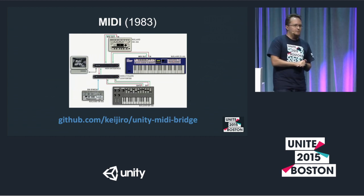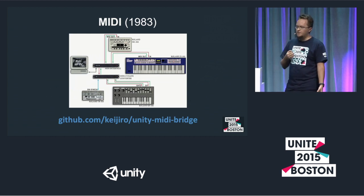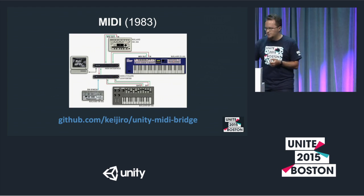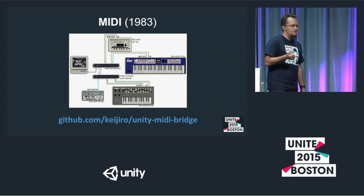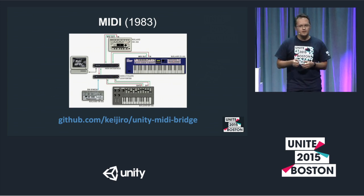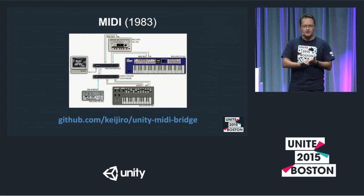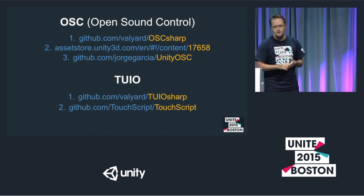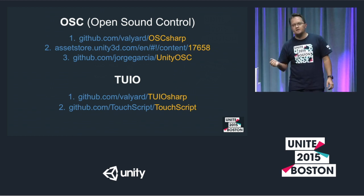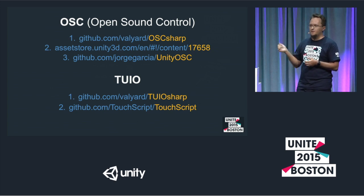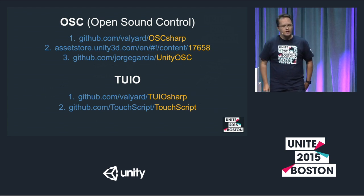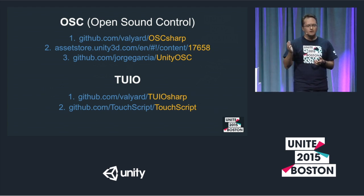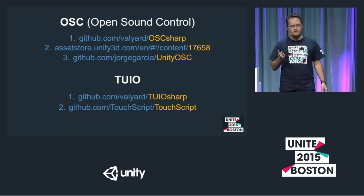It's interfaced with the outside world using this really old format called MIDI. It's actually older than me, but it's still actively used. There's a very simple wrapper for Unity made by my colleague from Unity Japan, Kate Zero — here's the URL, and this project uses this library. But nowadays, if you're interested in interfacing with these kinds of devices, you'd better use another protocol called OSC, Open Sound Control. There are a bunch of libraries available for Unity, including my small library, OSC Sharp, a great Asset Store package, and another open source library, Unity OSC.